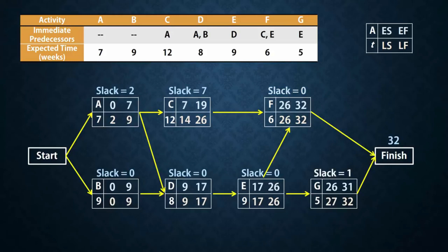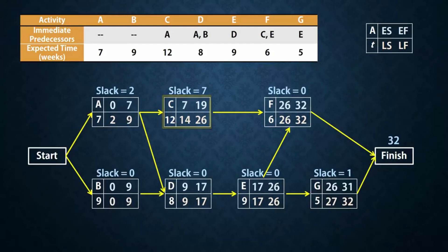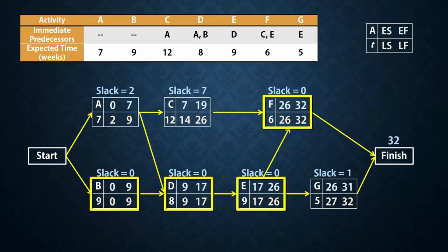Note for example that activity C can begin any time between week 7 and 14, and it can finish any time between 19 and 26. Thus C can be delayed for up to 7 weeks, and the project will still be completed in week 32. Activities B, D, E, and F on the other hand cannot be delayed at all without extending the project's completion time. So for example, if D is delayed by 2 weeks, then the project completion time will be extended by 2 weeks as well, from 32 to 34.